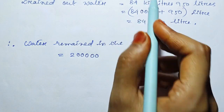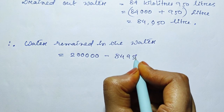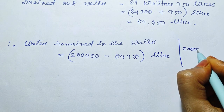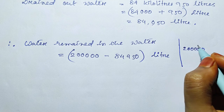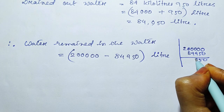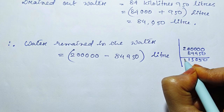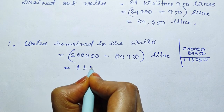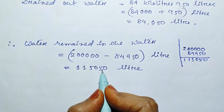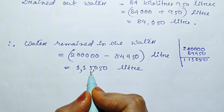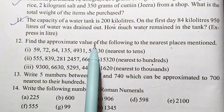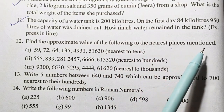Subtracting: 84,950 liters from the total — working through the calculation: 1,1,1,5,0,5,0 — giving 1,15,500 liters remaining. Question number 12: Find the approximate value of the following to the nearest places mentioned.